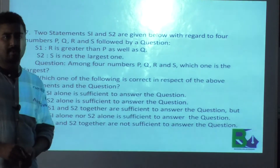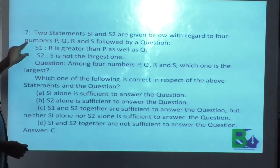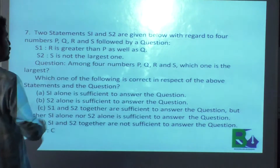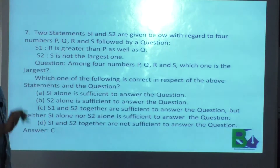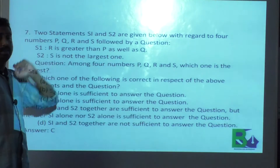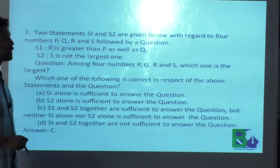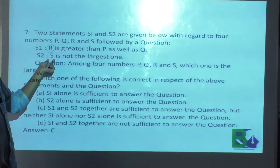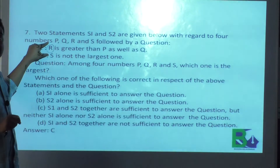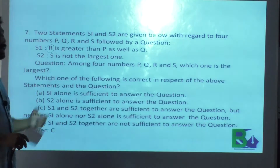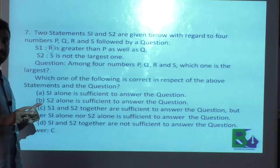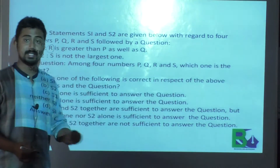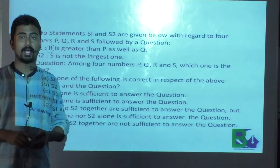This is another data sufficiency question. Among four members P, Q, R, S — which one is the largest? Statement 1: R is greater than P and Q — so R is the largest among P and Q. Statement 2: S is not the largest one. If S is not the largest, the only option available is R. So by using S1 and S2, we can find that R is the largest. Both statements are used, so option C is correct — S1 and S2 together are sufficient, but alone neither is sufficient.